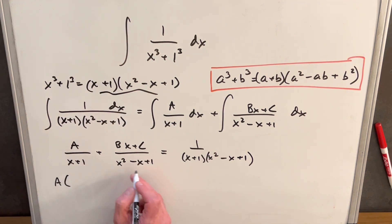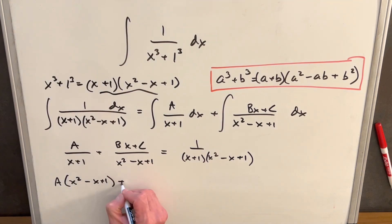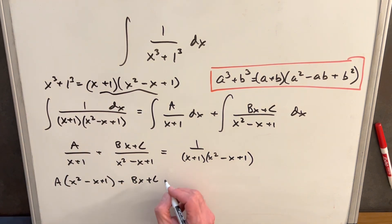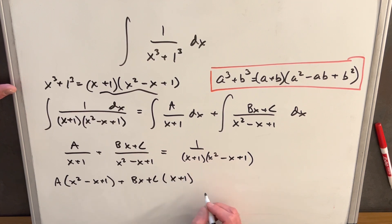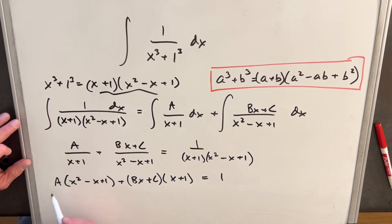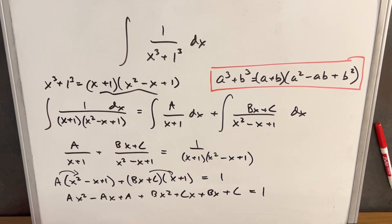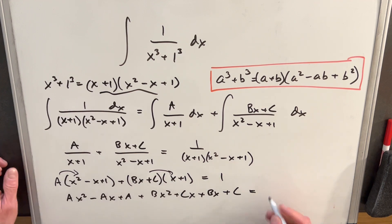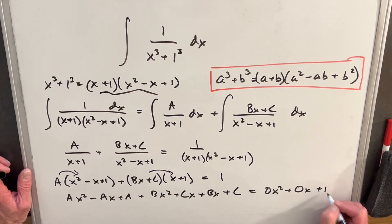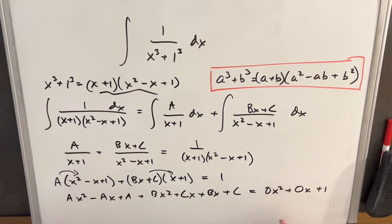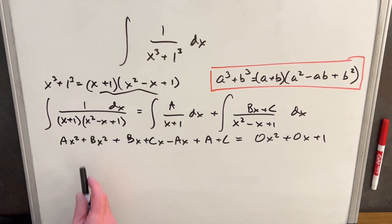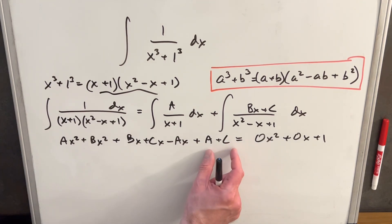We're going to have A multiplied by x squared minus x plus 1, plus Bx plus C multiplied by x plus 1, and this whole thing equals 1. We distribute A and multiply out the second term, giving us a long expression. Then we simplify by collecting like terms, writing the right side as 0x squared plus 0x plus 1 so we can compare coefficients for x squared, x, and constant terms.